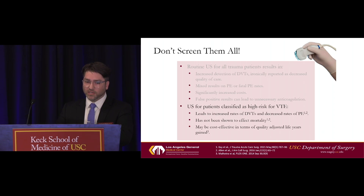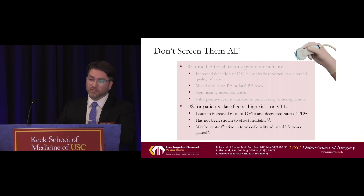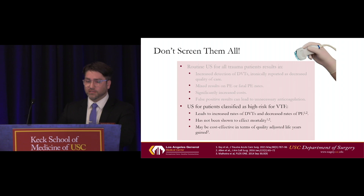There's been a number of studies, mostly in recent years, looking at patients who are just high risk and are screened. This includes the first ever randomized controlled trial of ultrasound screening for high-risk patients, which came out in 2021. This has been able to show that while you again have increased rates of DVT, there are actually decreased rates of pulmonary embolism in this group, and due to that it might be cost-effective in terms of quality-adjusted life years gained. None of these studies are big enough given the low rates of PE, even in high-risk patients, to show an effect on mortality — they're just not powered for that.